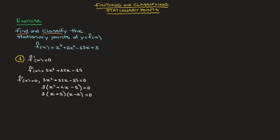Now in factored form, the solutions are easy to find. Since 3 can't equal 0, either x + 5 = 0, giving x = −5, or x − 1 = 0, giving x = 1. These two solutions tell us that our function has two stationary points: one with x-coordinate −5, and the other with x-coordinate 1.